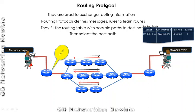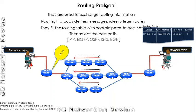Finally, routing protocols select the best path and send information to the destination. Examples of routing protocols include RIP, EIGRP (Enhanced Interior Gateway Routing Protocol), OSPF (Open Shortest Path First), IS-IS (Intermediate System to Intermediate System), and BGP (Border Gateway Protocol). These are all examples of routing protocols.